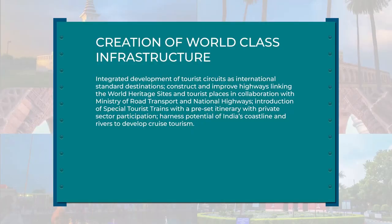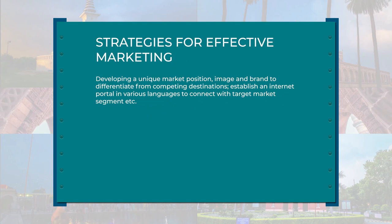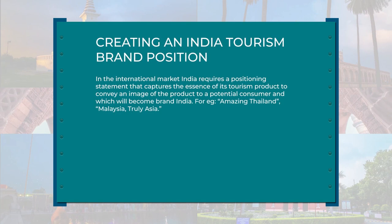Other priorities include creation of world-class infrastructure, integrated development of tourist circuits as international standard destinations, and constructing and improving highways linking world heritage sites. Strategies for effective marketing include developing a unique market position, image, and brand to differentiate from competing destinations, and creating an India tourism brand position. In the international market, India requires a positioning statement that captures the essence of its tourism product and conveys an image to the potential consumer — a brand India on the lines of 'Amazing Thailand' and 'Malaysia, Truly Asia'.